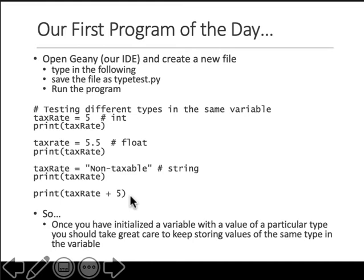Let's look at what happens top-down. The first line is a comment — if you remember from last lecture, anything that starts with a hash is a comment. Here you are testing different types in the same variable, and you can write whatever explanation you want for your program.